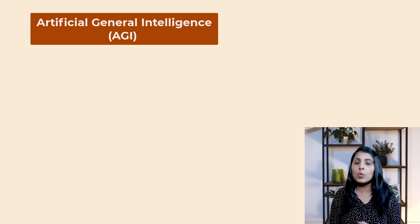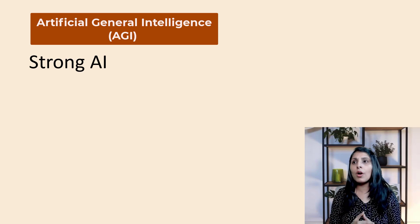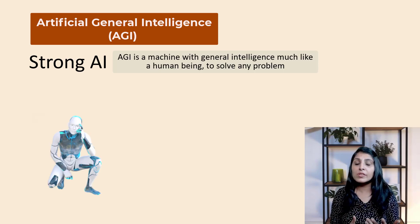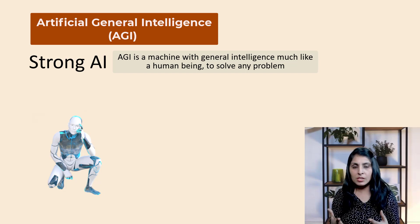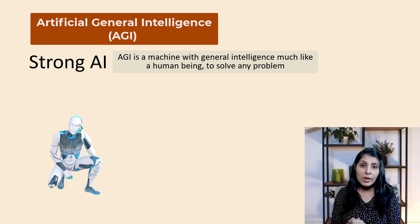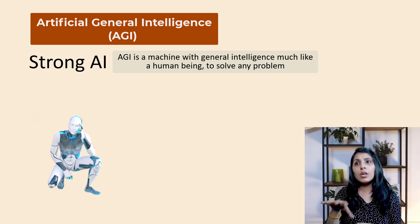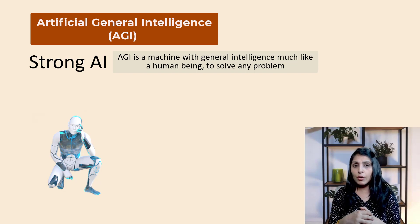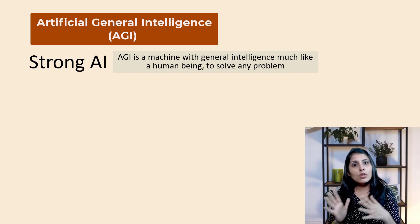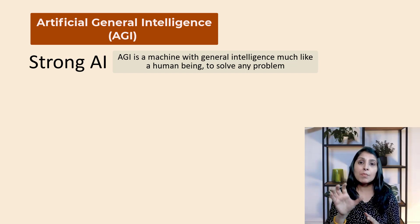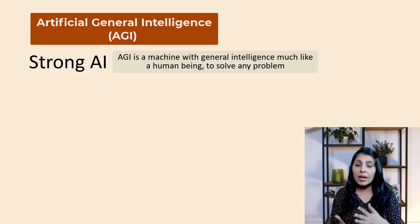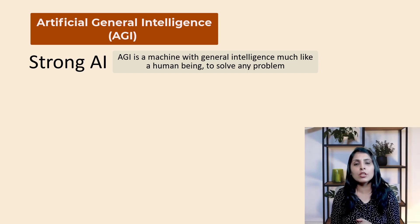The next type is AGI — Artificial General Intelligence, also known as strong AI. The aim of strong AI is to create intelligent machines that behave identically to the human mind. Humans learn from experience and apply that learning to other situations where it makes sense. AGI would be a machine with general intelligence, much like a human being — able to think, understand, learn, and apply its intelligence to solve any problem in any given situation.